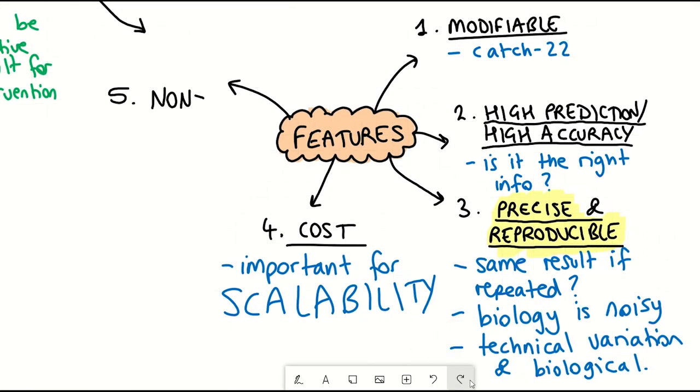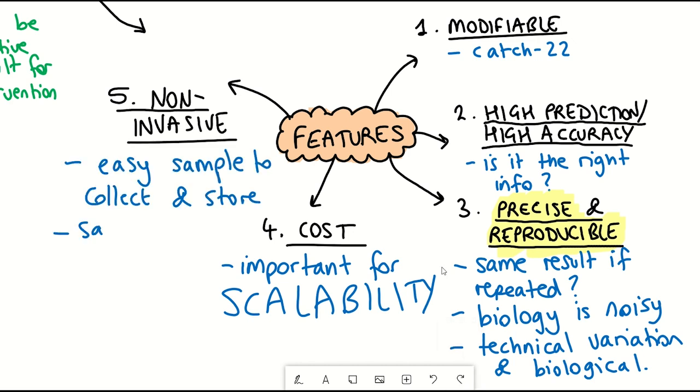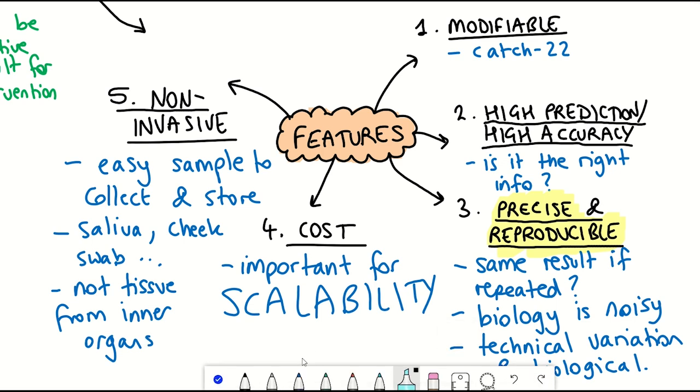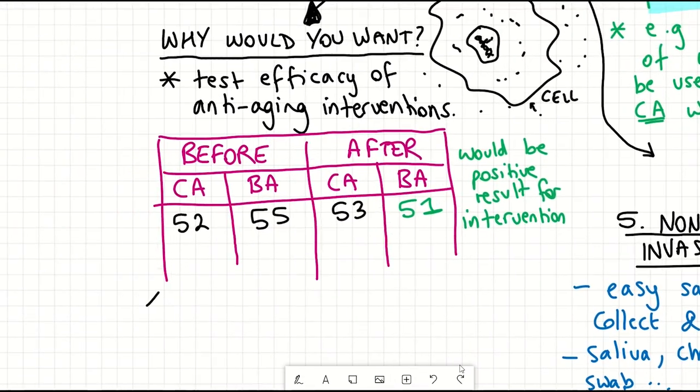And then lastly a very important feature is that it's non-invasive and can be easily measured. So things like saliva samples, cheek swabs, hair samples, and I guess to some extent blood samples. And so again these are just desirable features. It may be more informative to have tissue samples but I don't think there's going to be much demand in an aging clock that requires more invasive tissue samples.